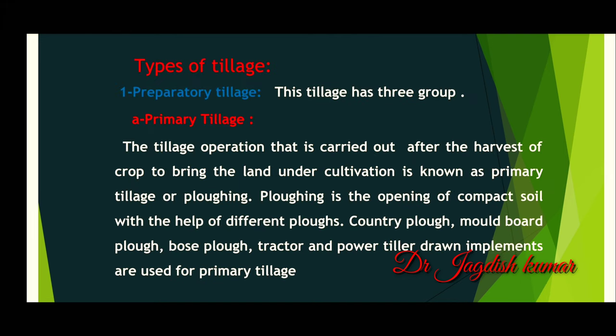Now come to the types of tillage. The first type is primary tillage. The tillage operation that is carried out after the harvest of a crop to bring the land under condition is known as primary tillage or plowing. Plowing is the opening of compact soil with the help of different plows — entry plows, moldboard plows, disc plows, tractors and power tillers.